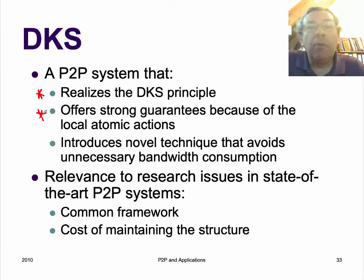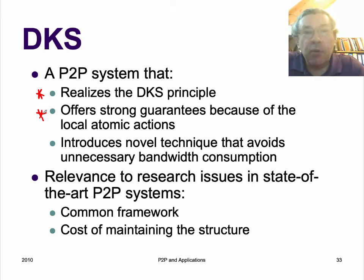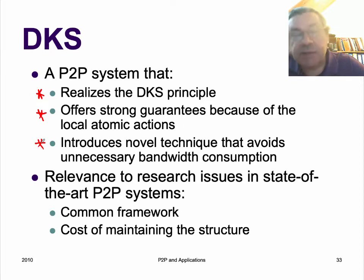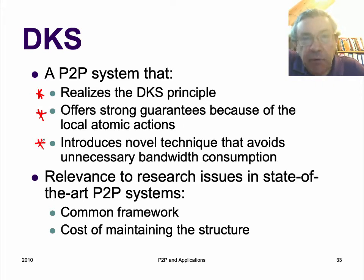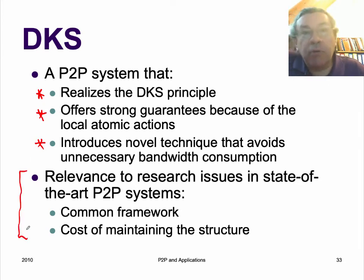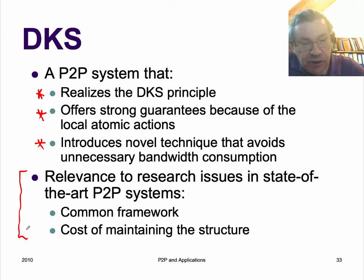It uses local atomic actions for nodes to join and leave, which means if you have concurrent joins and leaves, everything works fine. It also has techniques for correcting the routing tables that reduce bandwidth and are efficient. This is an important advance in the research — the state-of-the-art.